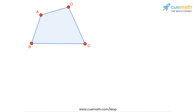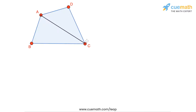Let's first take a convex quadrilateral ABCD. To find the sum of angles A, B, C, and D, we can divide this quadrilateral into two triangular parts by drawing a diagonal.